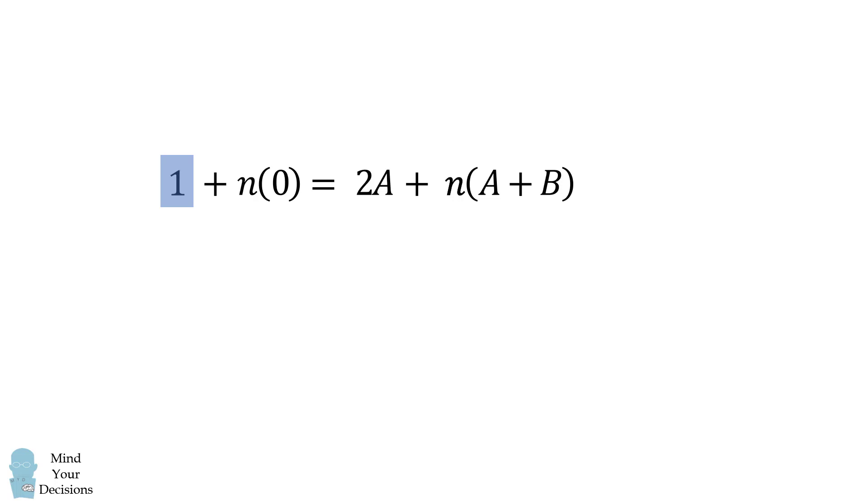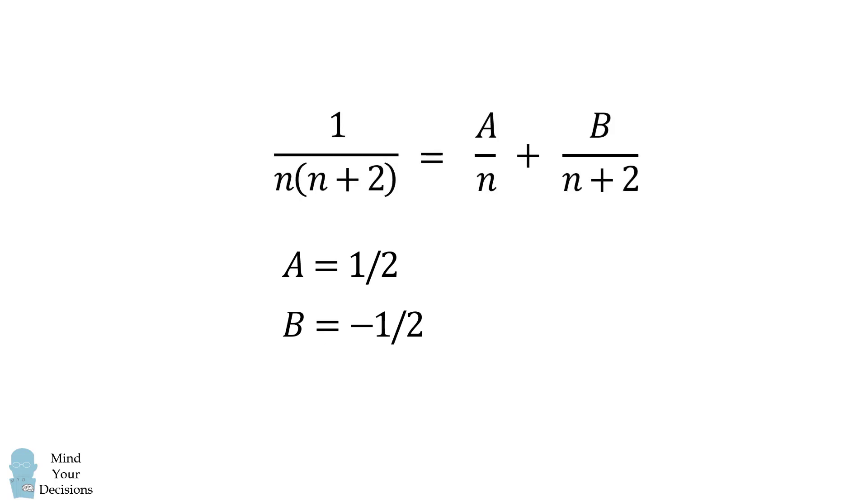We will now equate the constant coefficients. We need 2a to be equal to 1, which means a is equal to 1 half. We will now equate the coefficients on n. We want a plus b to be equal to 0. But we know that a is equal to 1 half. Therefore, b is equal to negative 1 half.